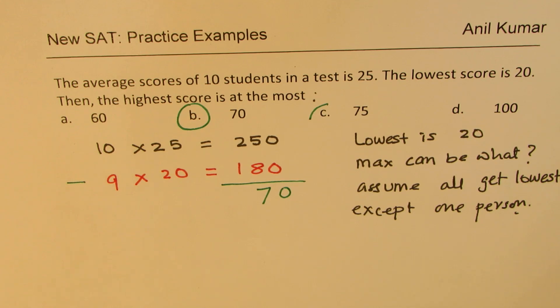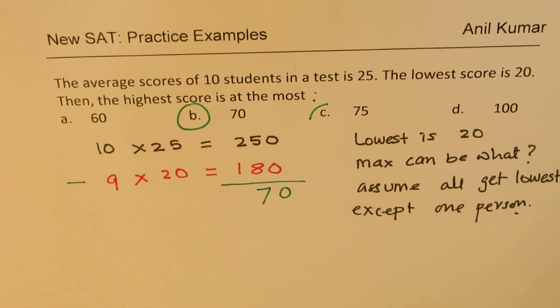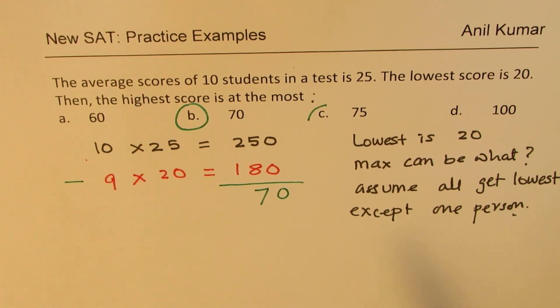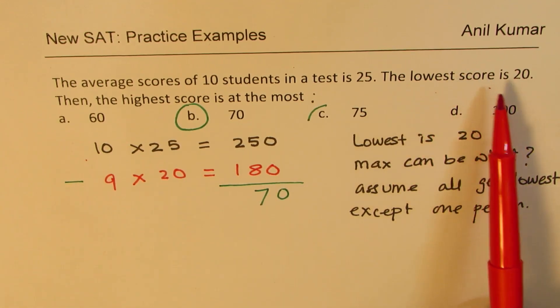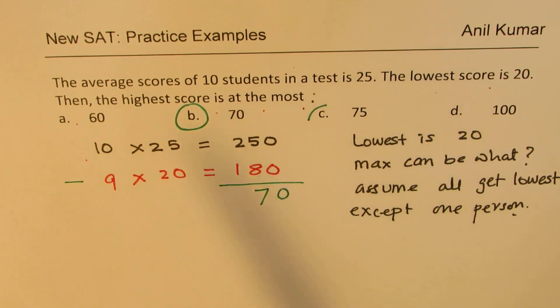Does it make sense? So let's go over this question once again. The average score of 10 students in a test is 25. That means the total score of 10 students is 250. The lowest score is 20. Then the highest score is at the most what? So the lowest is 20.